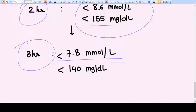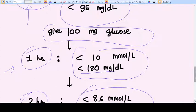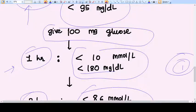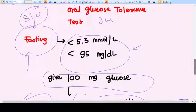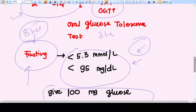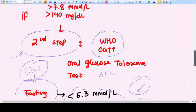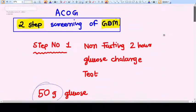If any of these cutoffs is crossed, then the patient is diagnosed as having GDM. And if in this test the values come less than these cutoffs, then the patient is now diagnosed as not having GDM. Thank you.